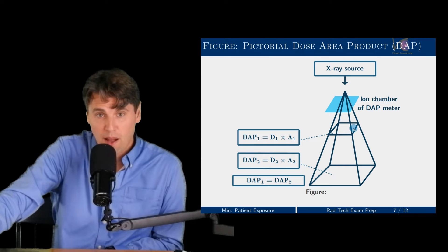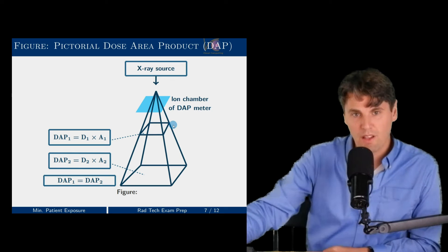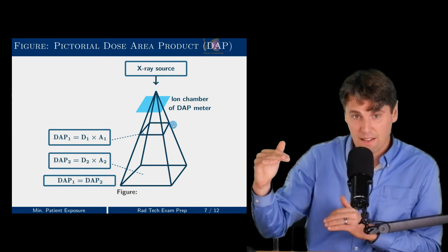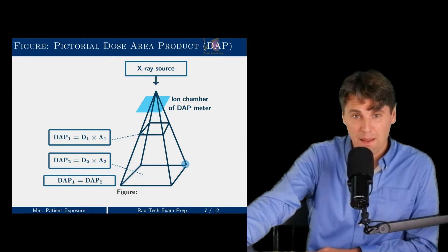If you looked at the dose area product in this rectangle right here, the rectangle is smaller, but the relative exposure is higher than as you come down here because of our one over R squared. If you measure the dose area product at any given distances from our x-ray tube, you're actually going to come up with the same measurements.